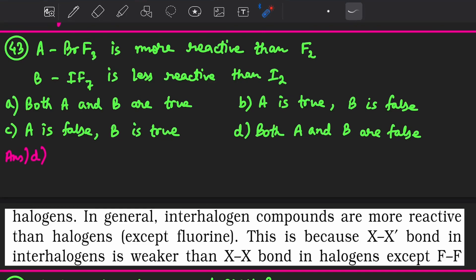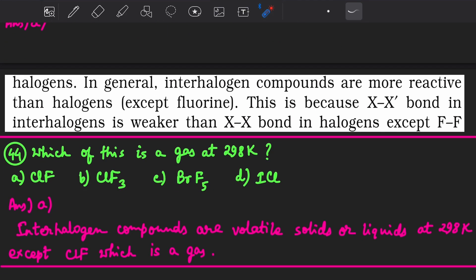Hello friends, welcome. Our next MCQ is: Statement A - BrF3 is more reactive than fluorine. Statement B - IF7 is less reactive than iodine. Both statements are wrong because interhalogen compounds are more reactive than any halogens except fluorine.